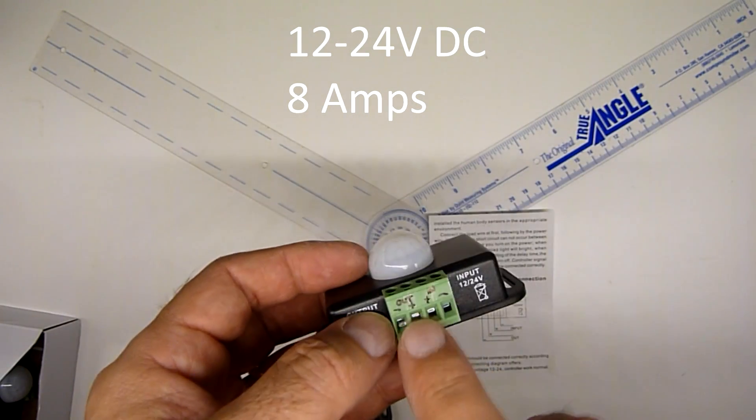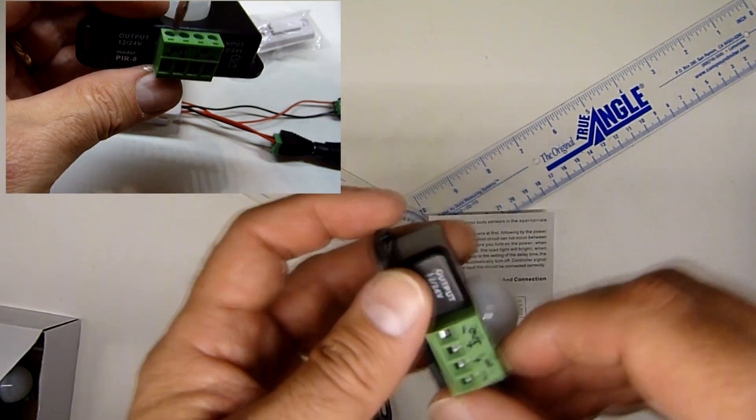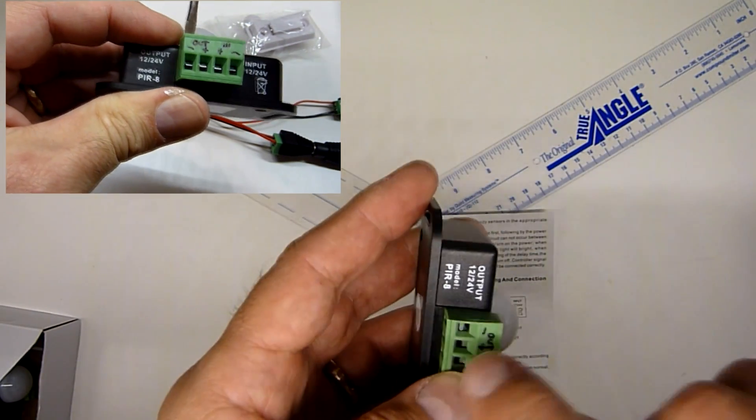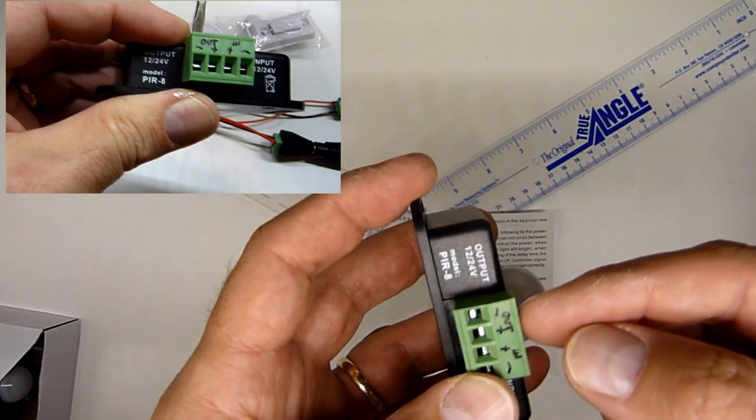The nut style on this is a drawdown nut. That means you loosen the nut up, it creates a gap, you stick the wire in, and then you tighten it up.